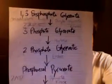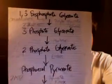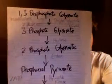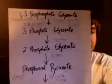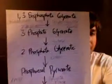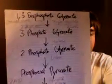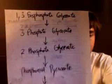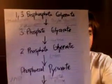3-phosphate glycerate just gets transformed into 2-phosphate glycerate using mutase. You would expect that to be an isomerase, but it's actually not — it's a mutase. Those molecules are very similar, so the name mutase makes sense there too.